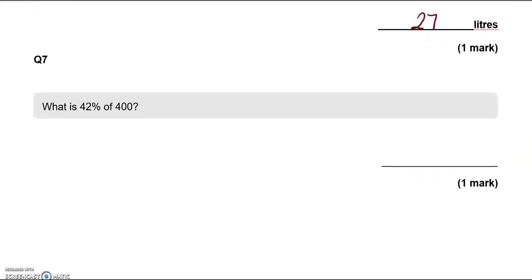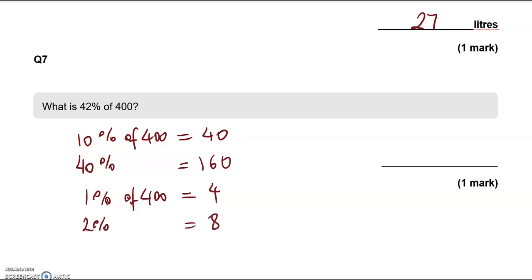Work out 42% of 400. So, we know that 10% of 400 is equal to 40. So, 40% will be 4 lots of it. So, 4 times 40, which is 160. Now, 1% of 400 is equal to 4. So, 400 divided by 100 gives us 4. 2% will be 2 lots of it, which is 8. So, 40% and 2% makes 42%. So, that is 160 and 8, which gives us 168.